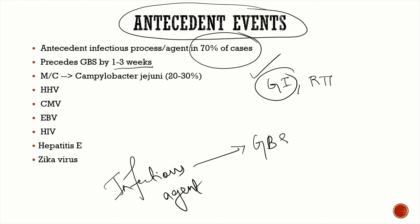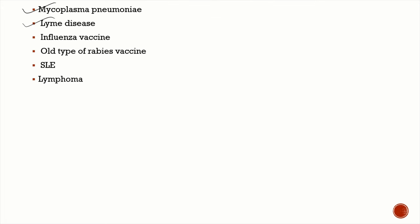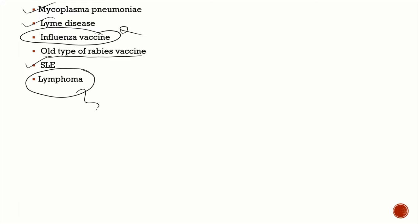The most common triggering agent is Campylobacter jejuni in 20 to 30 percent of cases — a very important MCQ. Others include human herpesvirus, cytomegalovirus, Epstein-Barr virus, and HIV. That's why it's important to check retroviral status in all GBS patients. Also important: hepatitis E, Zika virus, Mycoplasma pneumoniae, Lyme disease, influenza vaccine, old rabies vaccine based on neural antigens, autoimmune diseases like SLE, and malignancies like Hodgkin's lymphoma.